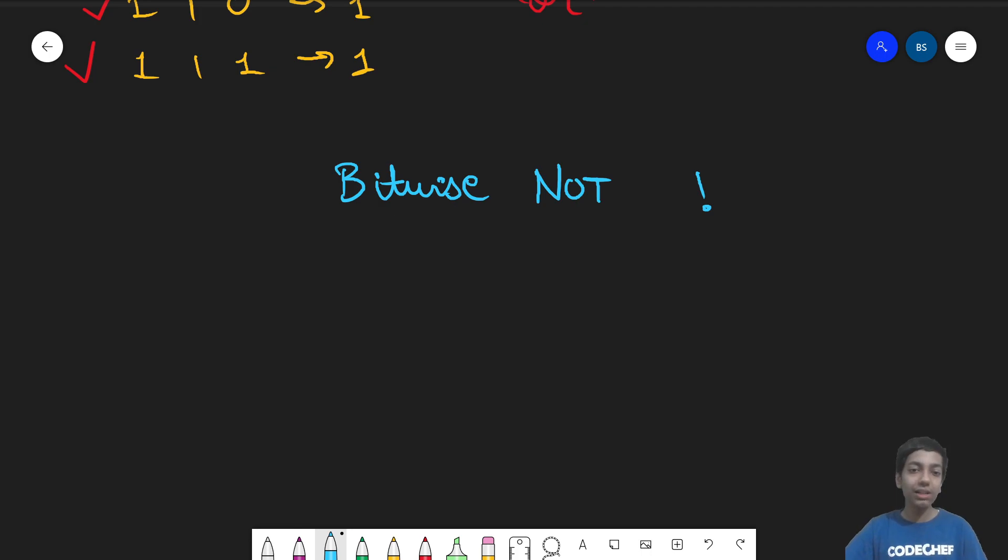The two operators that we saw above, bitwise AND, bitwise OR, they were binary operators. Like by means 2. So they take two operands and then they operate on their bits. But bitwise NOT takes only one operand. So it is a unary operator.